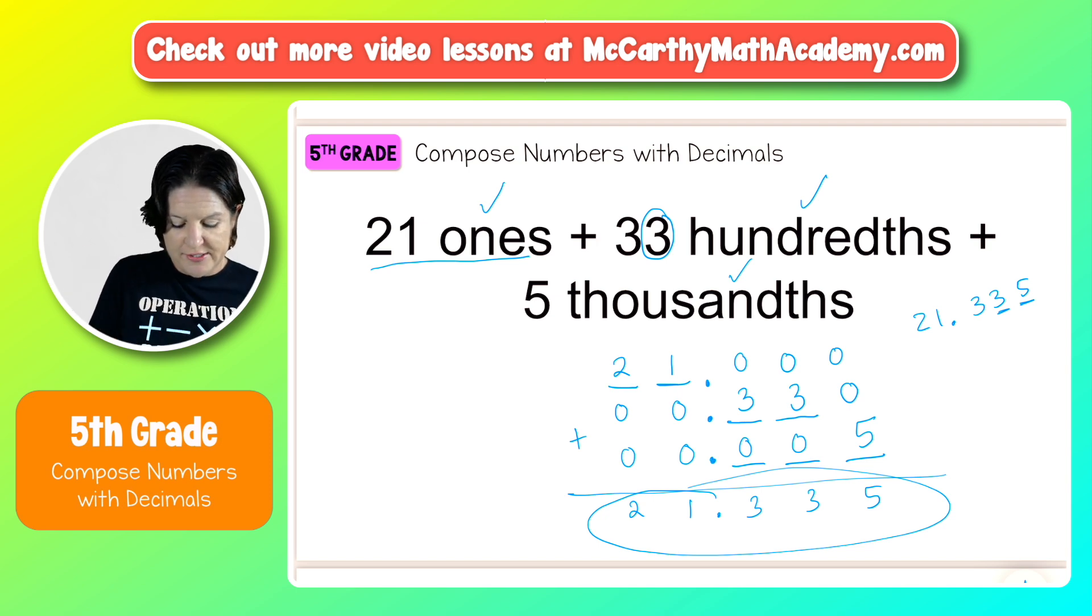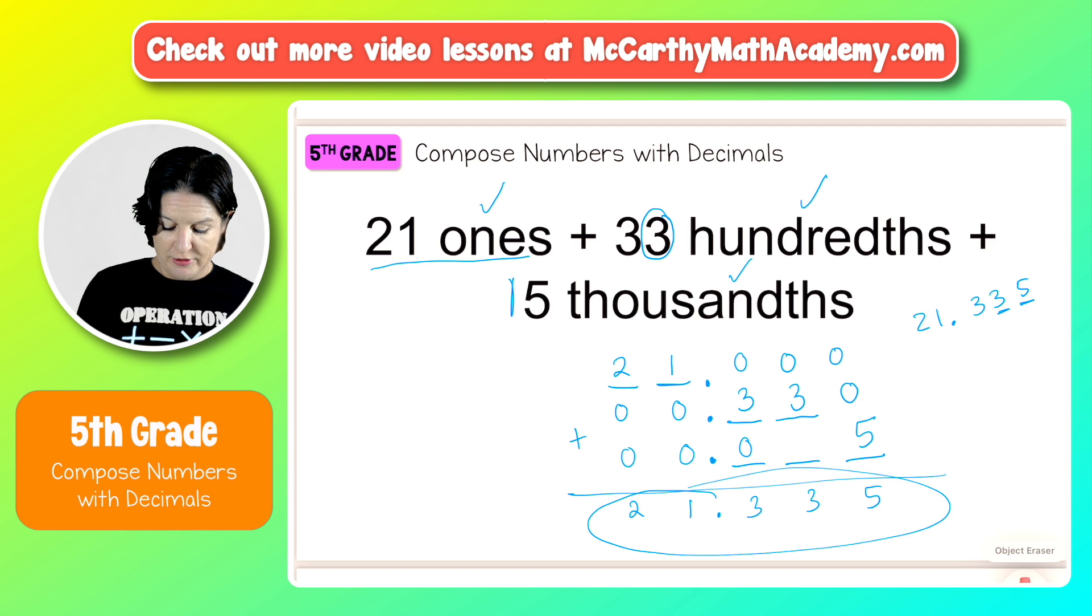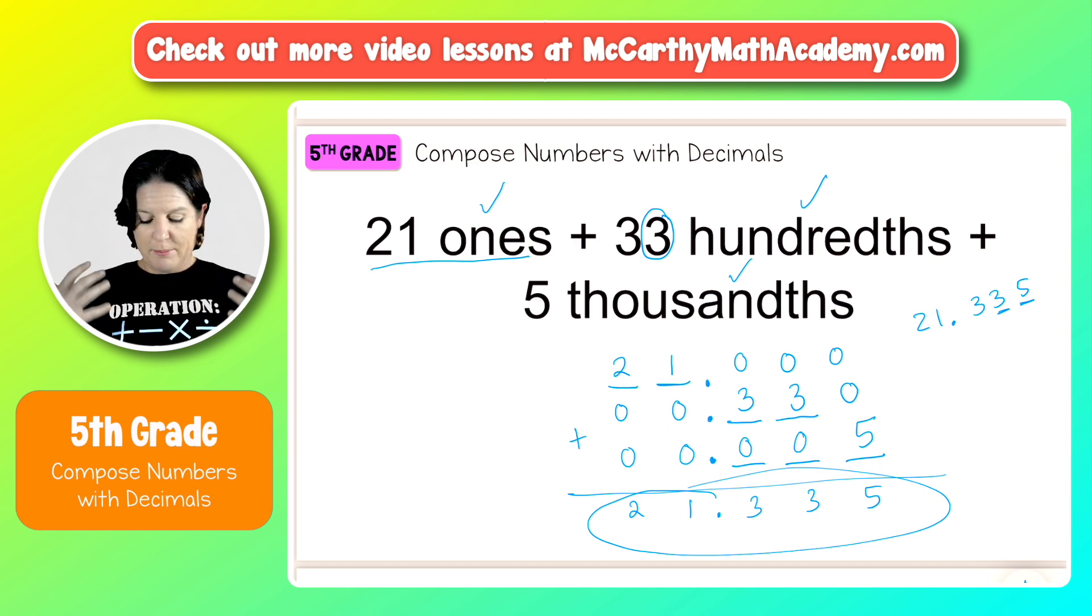But sometimes it makes sense to stack it up because you might be regrouping a little bit. For instance, if this said fifteen thousandths, that's going to throw you off a little bit. So that would mean that we would have to change this to a one and then we would be regrouping a little bit there. That's not the case for this problem, but just something to keep tabs on. Stacking them and adding them together. It might seem like a little much, but that's a good habit to get into for composing numbers.